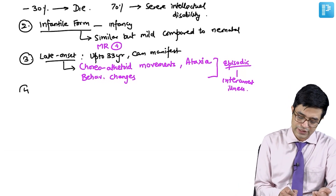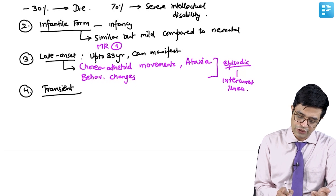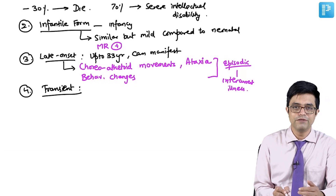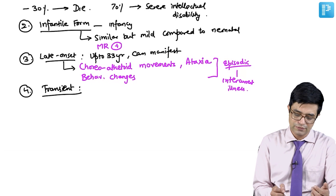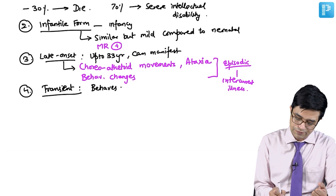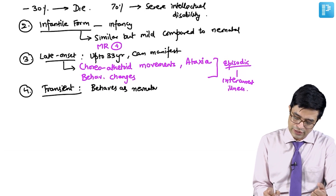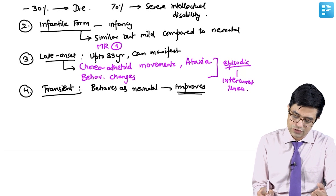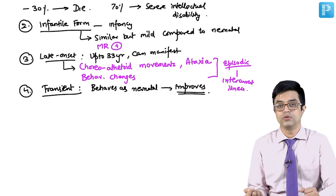The fourth is the transient form, which occurs due to immaturity of the cleavage enzyme system. It presents like the neonatal form but tends to improve without therapy and usually has a good outcome.